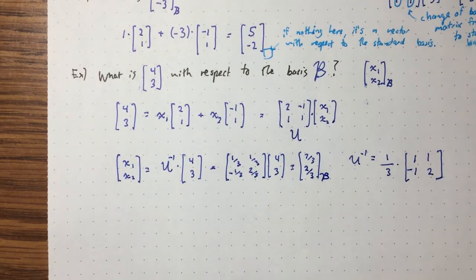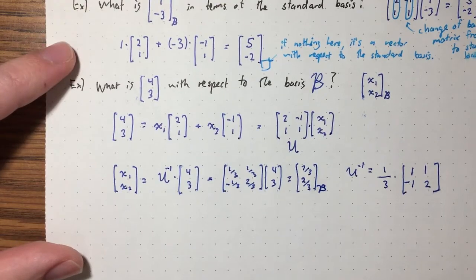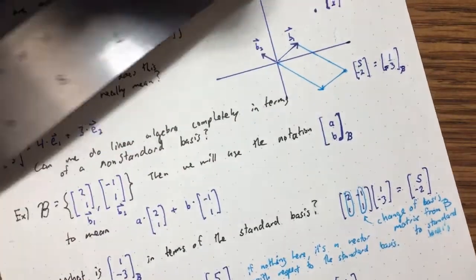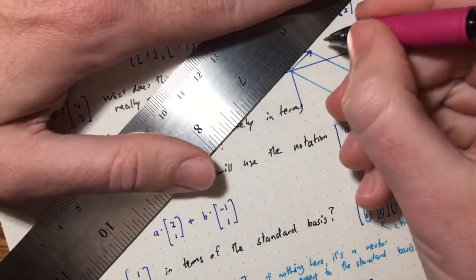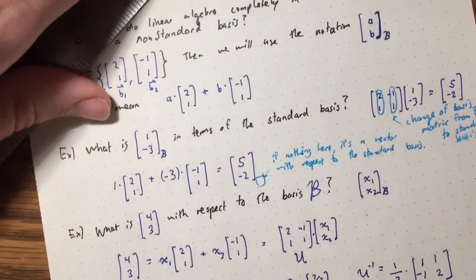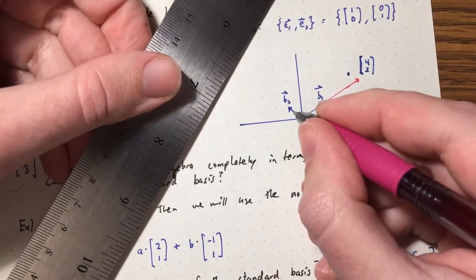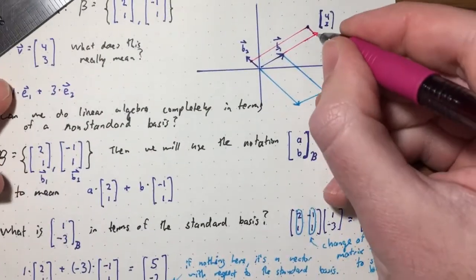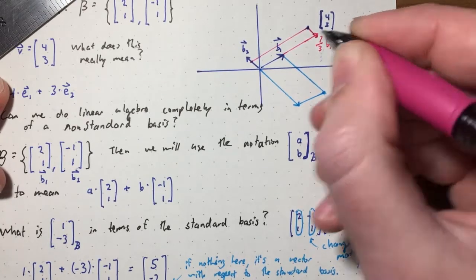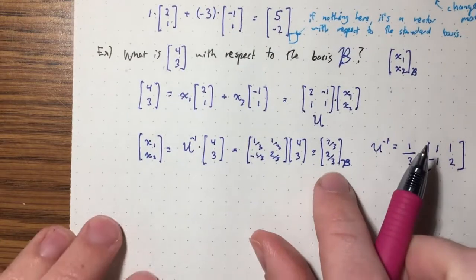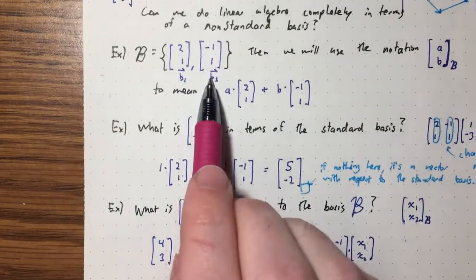What is (7/3, 2/3)_B saying? It's saying that (4,3) is 7/3 times the first basis vector B1 plus 2/3 times the second basis vector B2. Can we see this geometrically? Seven thirds of B1 plus two thirds of B2 — adding these two vectors should give us the point (4,3). This notation means 7/3 times my first basis vector plus 2/3 times my second basis vector.